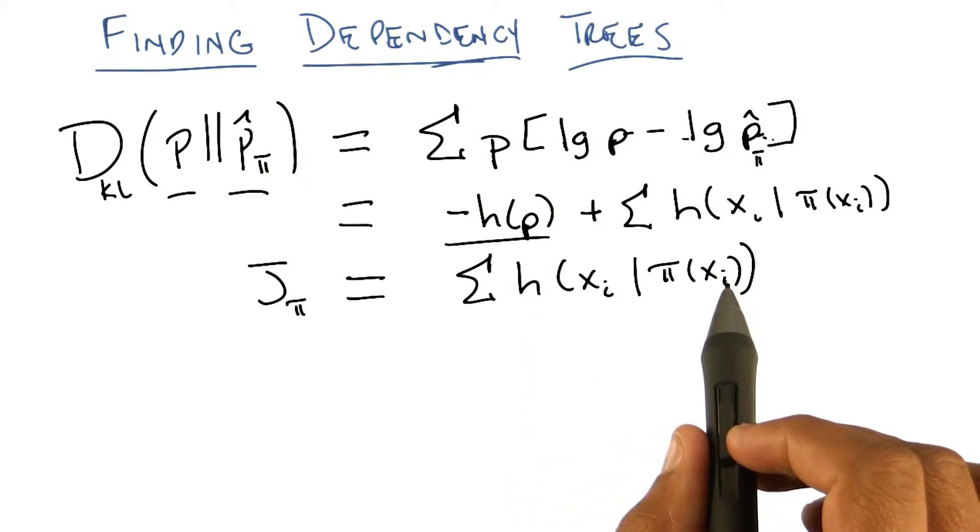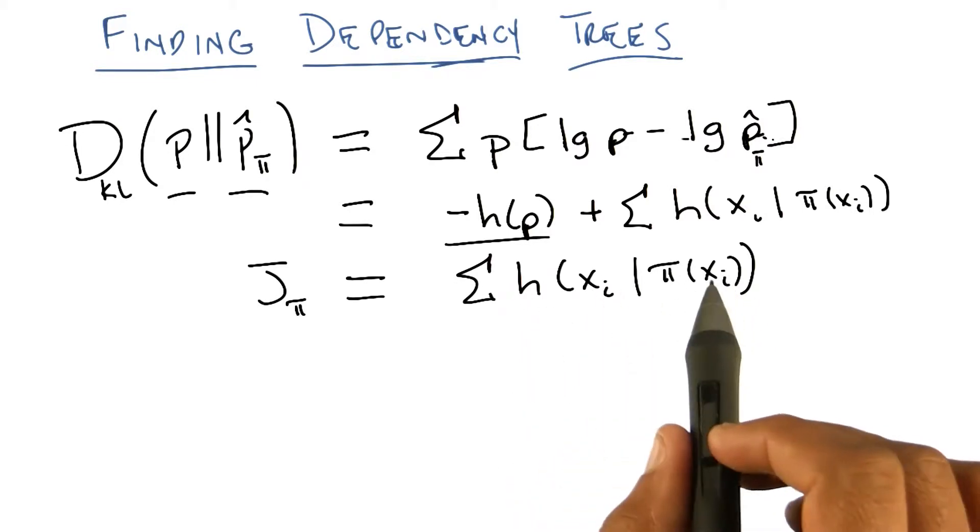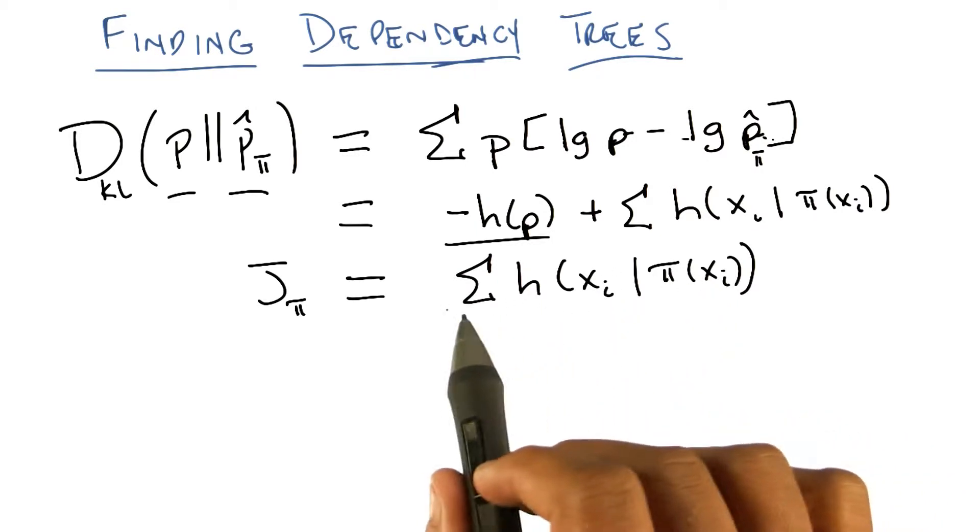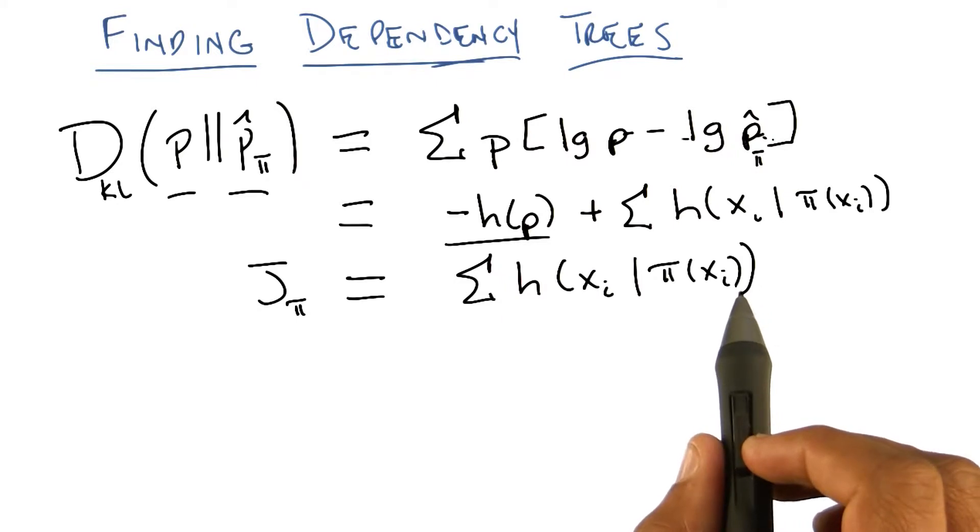So if I can find a set of parents for each of my features such that I get the most out of knowing the value of those parents, then I will have the lowest sum of entropies, conditional entropies.